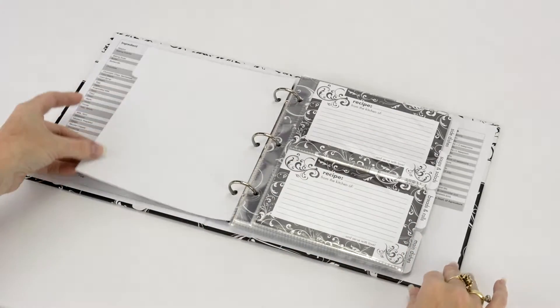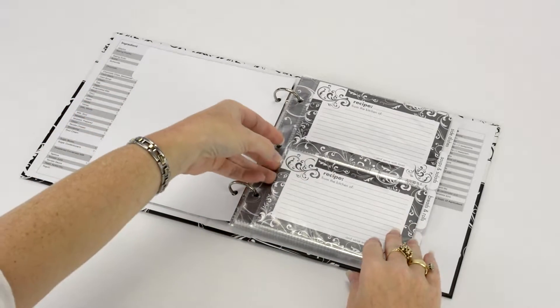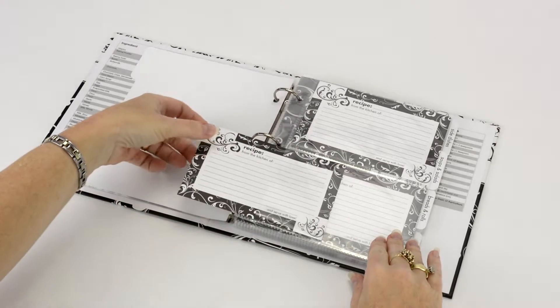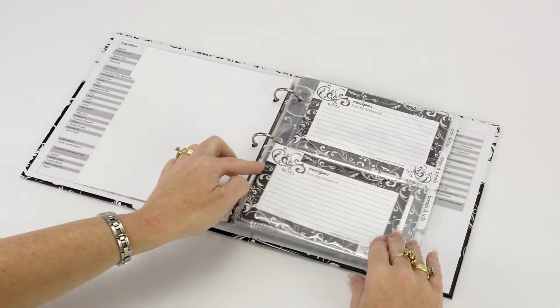Each 8 by 9 inch binder comes with 40 recipe cards, 20 clear acrylic pages, perfect for protecting your recipes from splatters and spills,